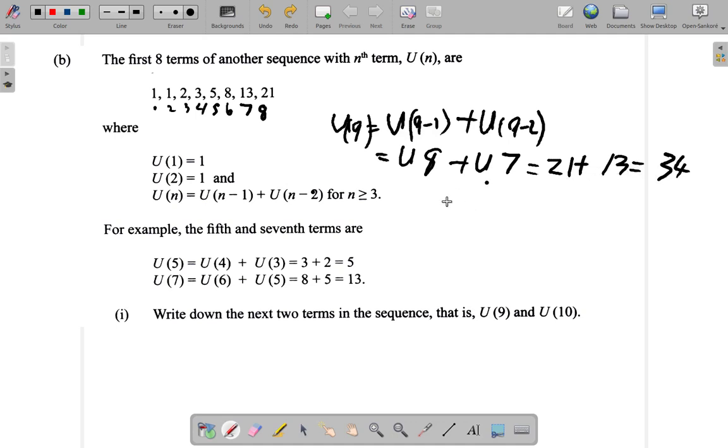After that, the next thing is to find U(10). So U(10) would be U(n) = U(n-1), so U(10) = U(10-1), plus U(n-2), in this case U(10-2). So U(10-1) is U(9), plus U(10-2) is 8, so plus U(8). So U9 plus U8.